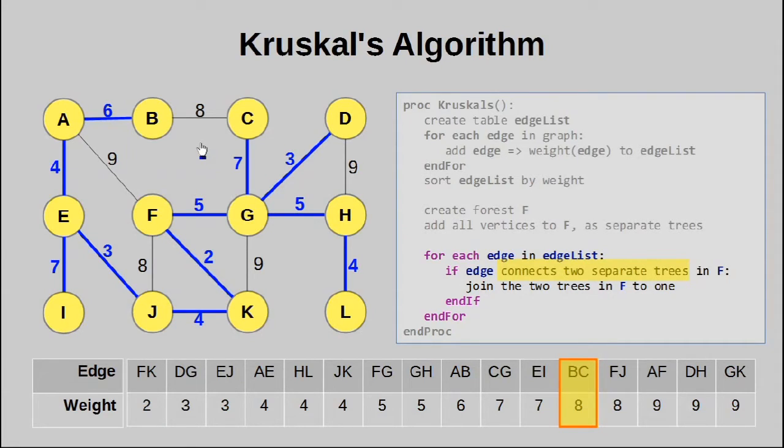But let's say we want to do it anyway. Let's try and include this edge. And notice what happens. We have actually created a cycle. Now, a tree can never have a cycle within it. Which is why we definitely have to reject this edge.